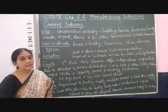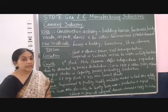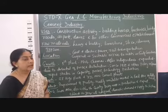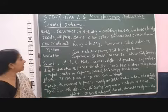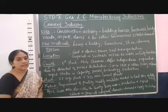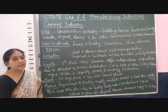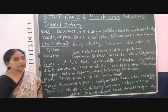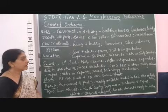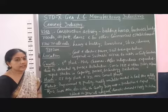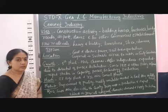The raw materials required for cement industry are very bulky and heavy, like limestone, silica, alumina, and gypsum. Cement industry can be easily located only in those places where coal and electric power is easily available and good transportation is also available.